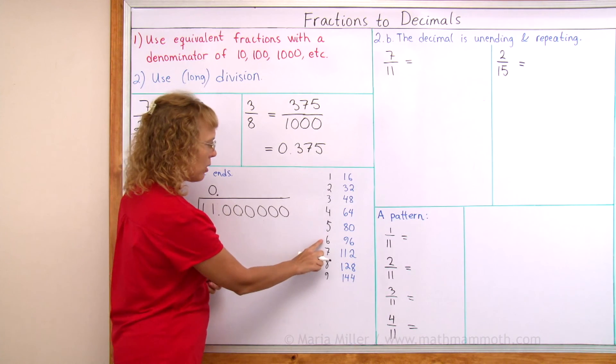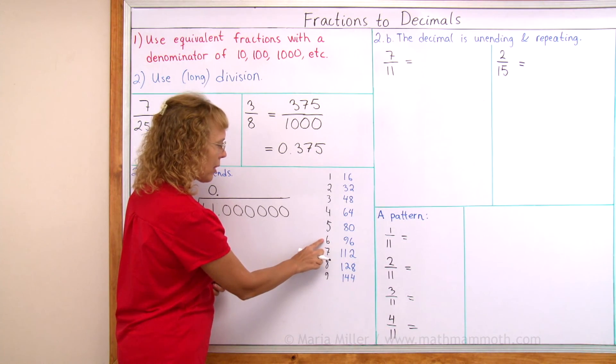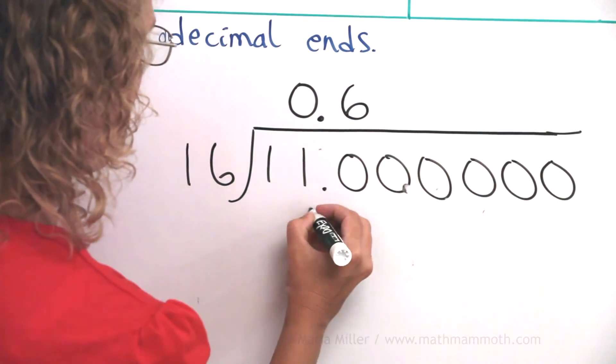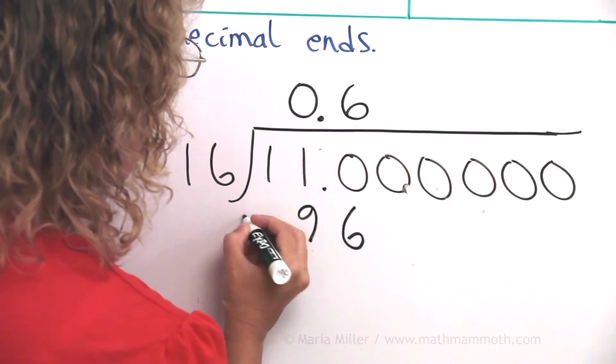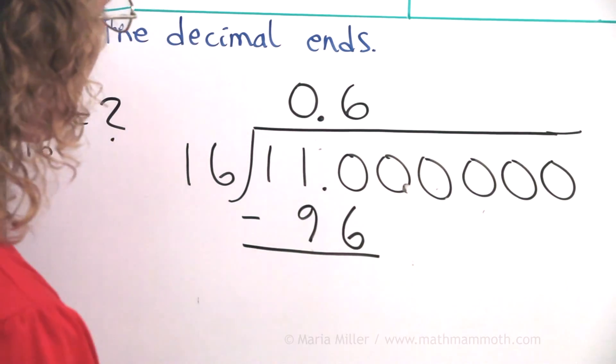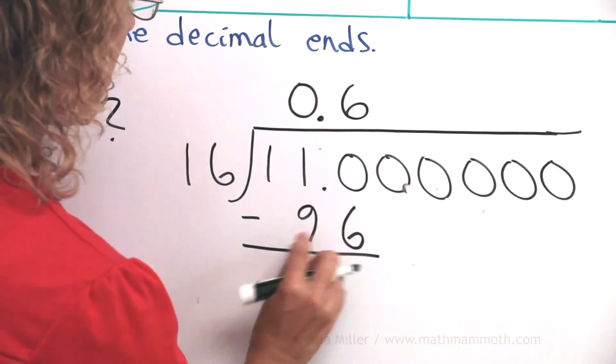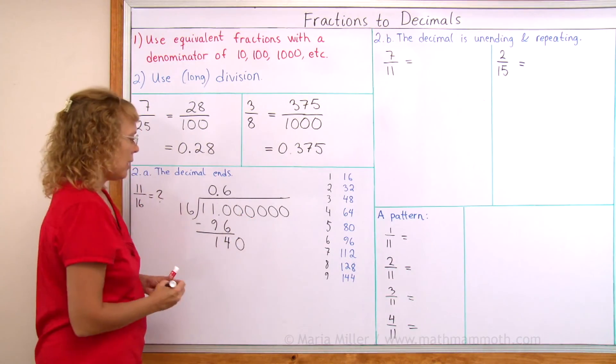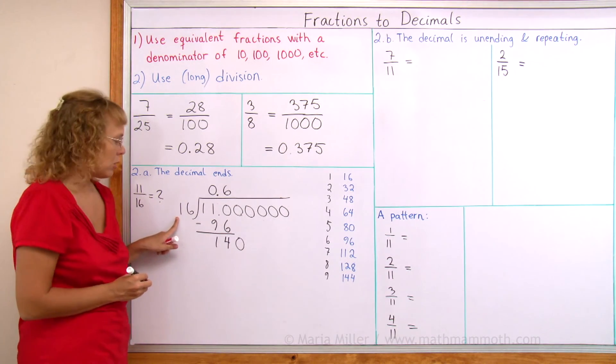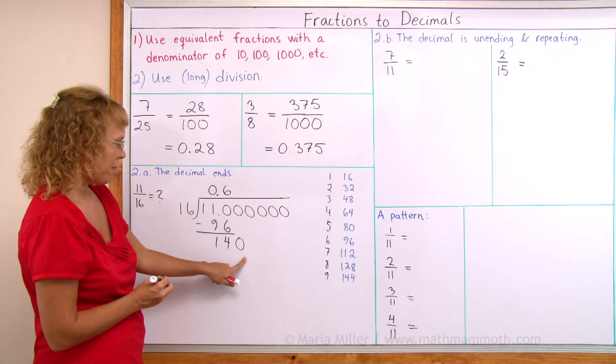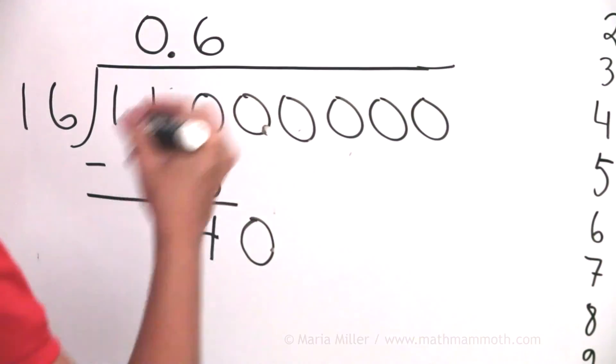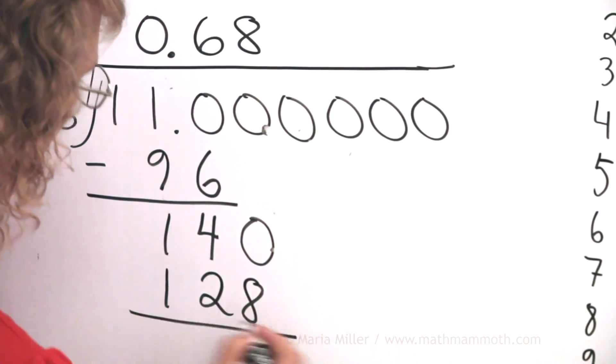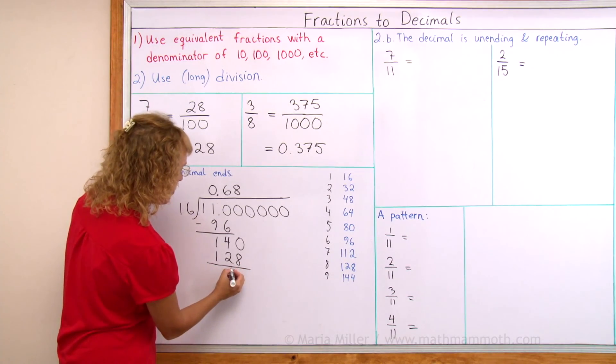16 goes into 11 zero times, so zero here. My decimal point will come right there at the same place. Now I look at 110. 16 goes into 110 six times. Six times 16 is 96. Then 110 minus 96 is 14.